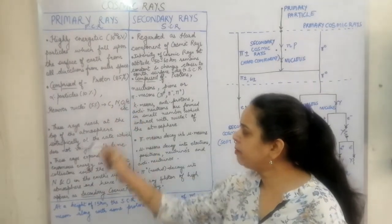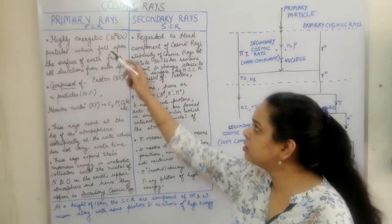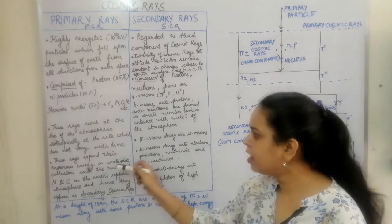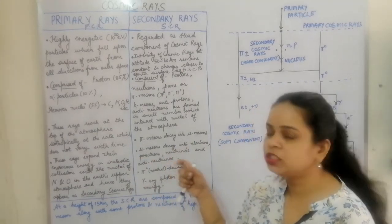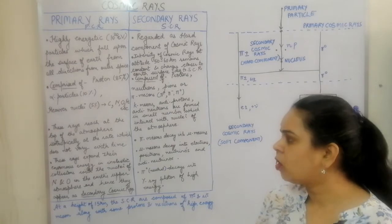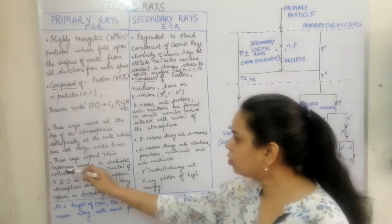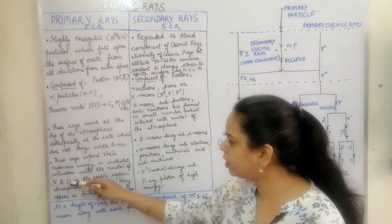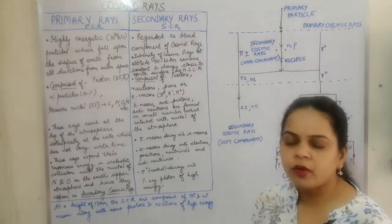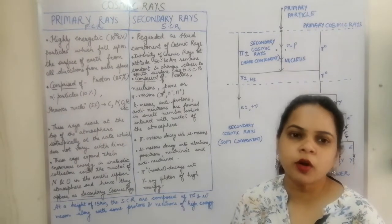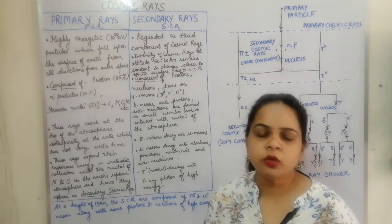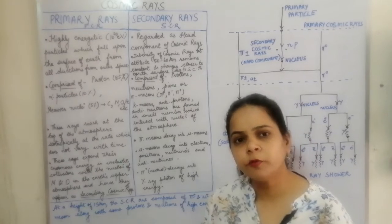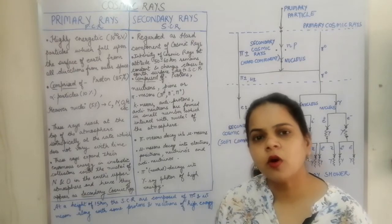The primary rays expend their enormous energy. Since the primary rays have very high energy, they collide with the nuclei of the atmosphere via inelastic collisions with the nitrogen and oxygen in the earth's upper atmosphere. When they collide with the nitrogen and oxygen, this results in the production of the secondary cosmic rays. So the primary rays are the basis for the formation of the secondary cosmic rays.